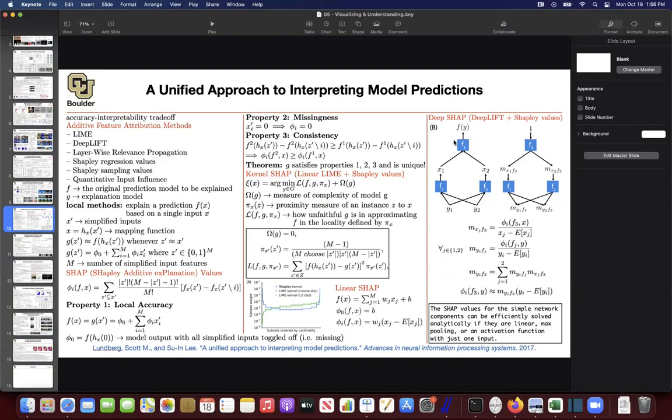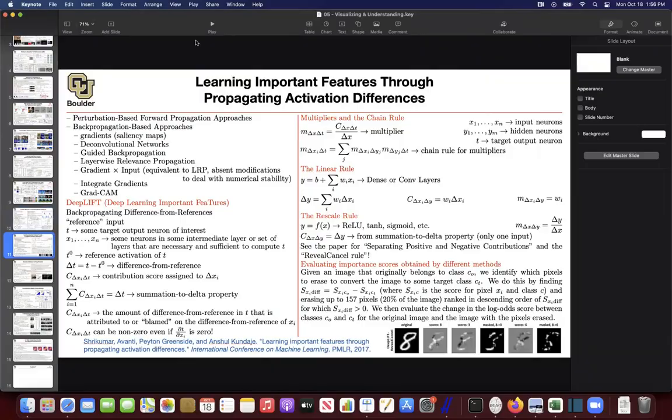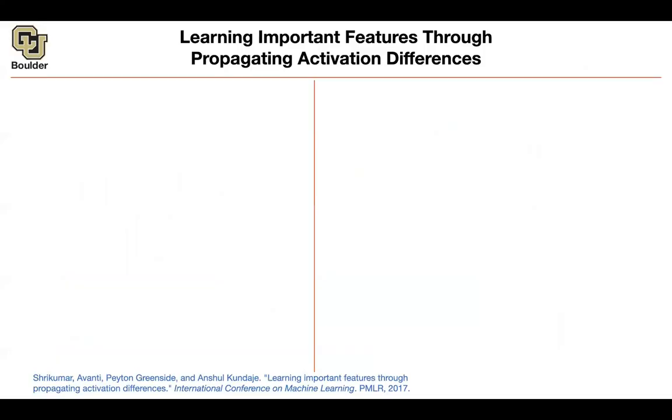Last session we stopped with SHAP, a very useful technique. We saw that you can change LIME to include SHAP values, have linear SHAP for linear models, and modify deep lift with SHAP values. It's a good idea to go through deep lift because it's going to help you understand the figure more. So today we're going to be learning about deep lift.